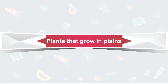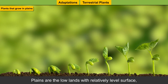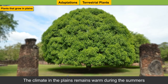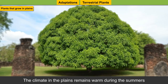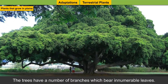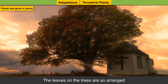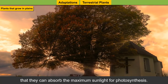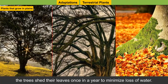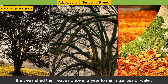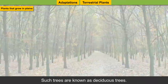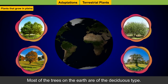Plains are the lowlands with a relatively level surface stretching over a vast geographical area. The climate in the plains remains warm during the summers and cold during the winters. The trees have a number of branches bearing innumerable leaves, arranged to absorb maximum sunlight for photosynthesis. In places that receive less rainfall, the trees shed their leaves once a year to minimize loss of water. Such trees are known as deciduous trees, and most trees on earth are of this type.